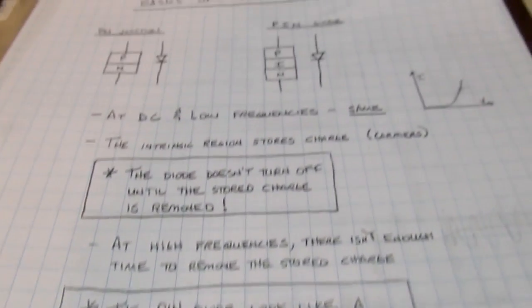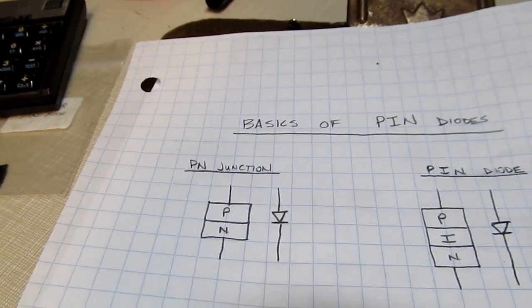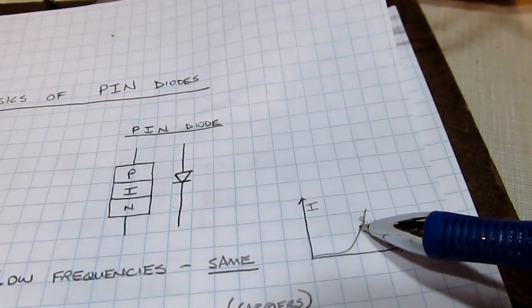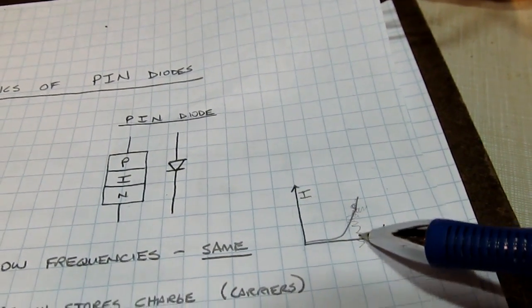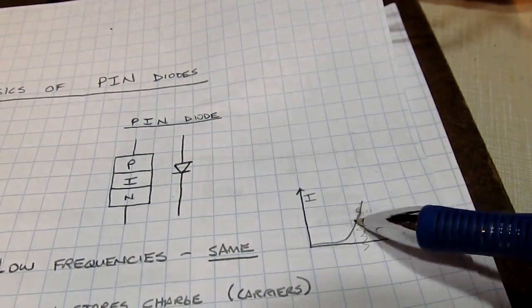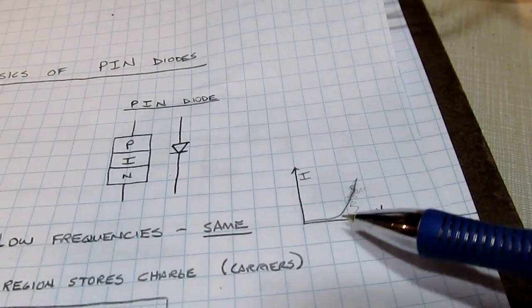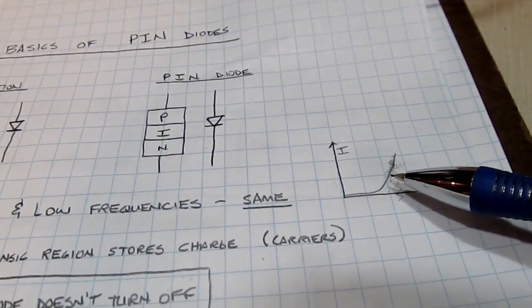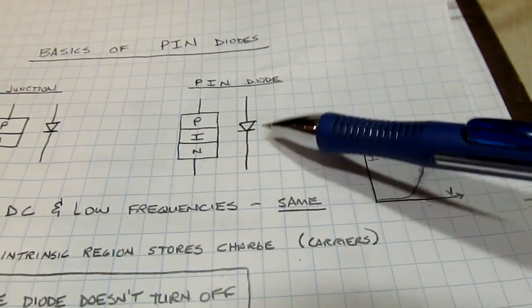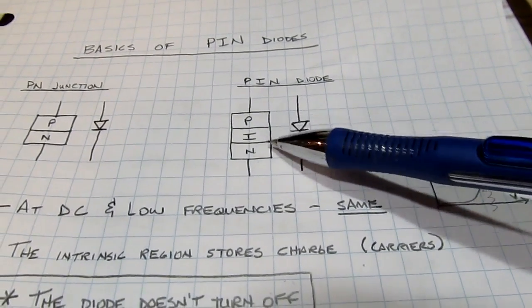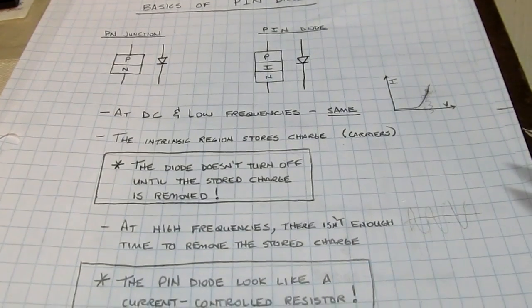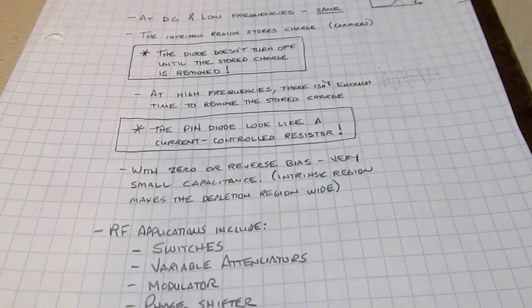In a previous video on junction diodes used as switches, we had to forward bias the diode sufficiently and keep the AC signal from swinging below the knee voltage to maintain low impedance. With a PIN diode we can actually go substantially negative and reverse bias the diode, and as long as the bucket of charge doesn't get depleted it will still conduct. This allows us to switch relatively large RF currents with relatively small bias currents.